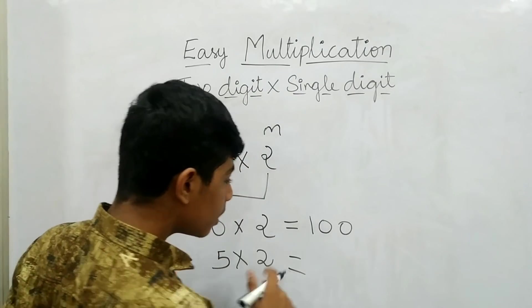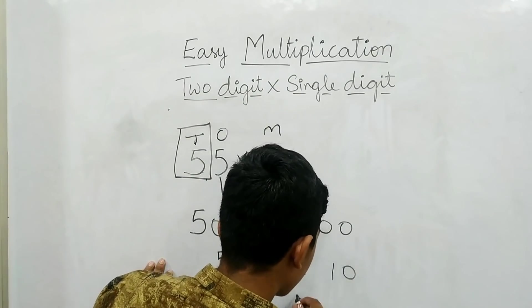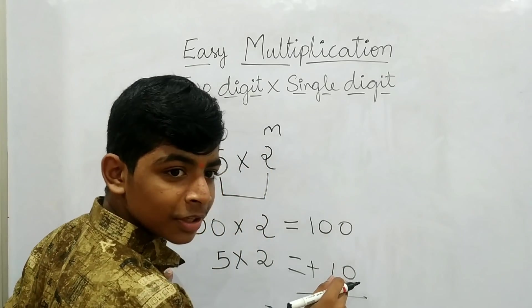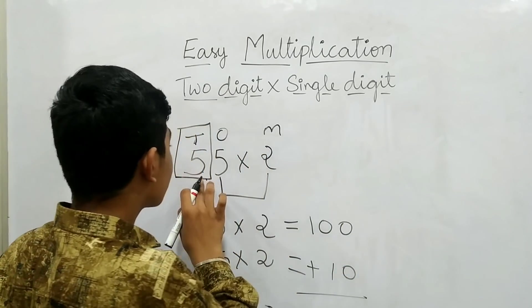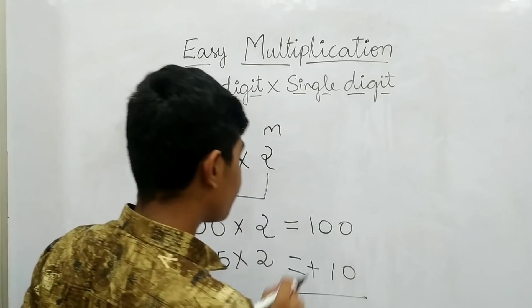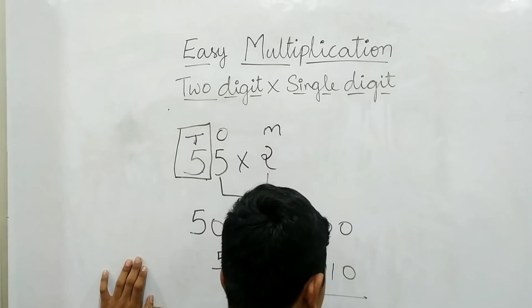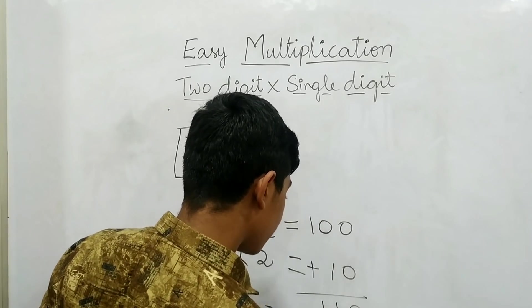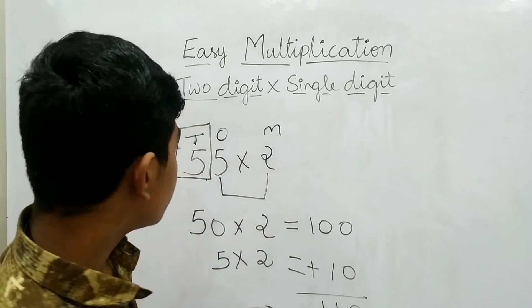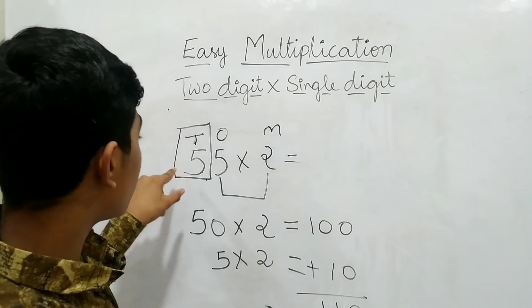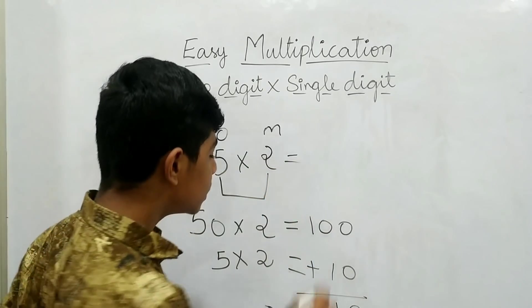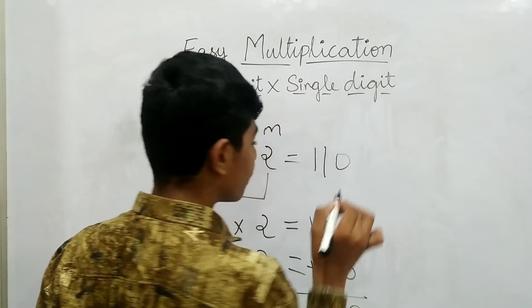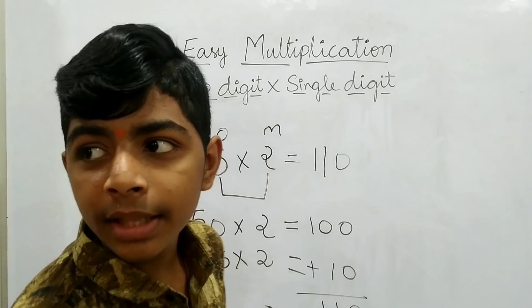5 into 2 is 10. Therefore, if we add these both numbers, we will get the final answer for 55 into 2. Therefore, 0 plus 0 is 0, 0 plus 1 is 1 and 1 like this. So, now, the final answer of 55 into 2 is 110. Now, let's go to another example.